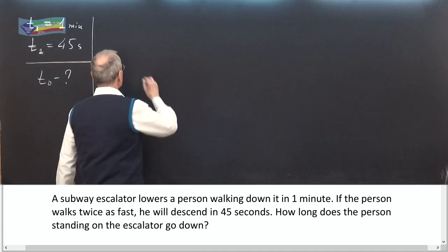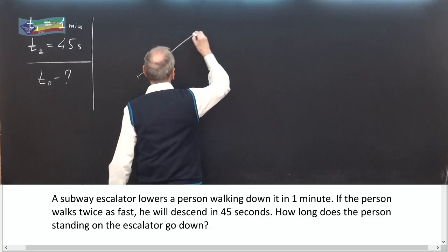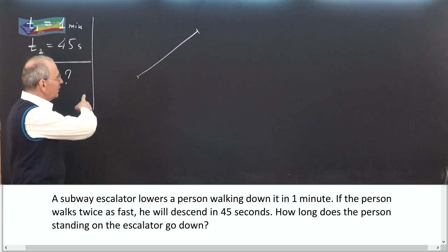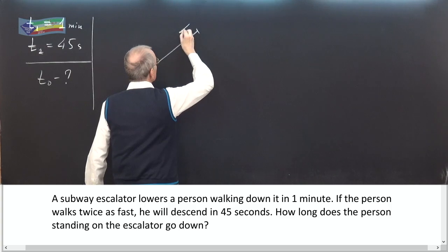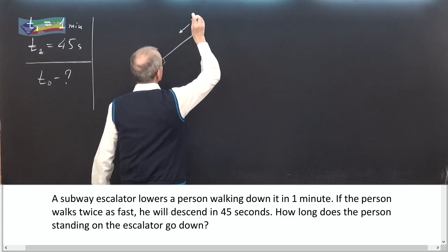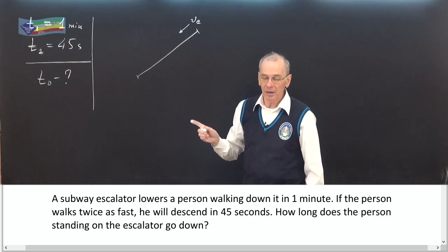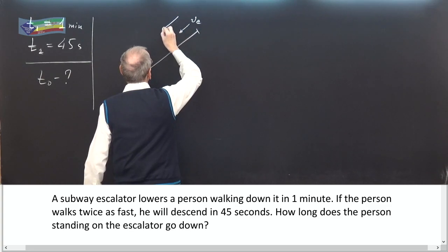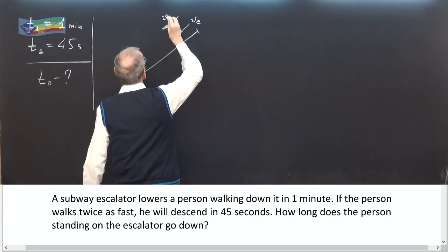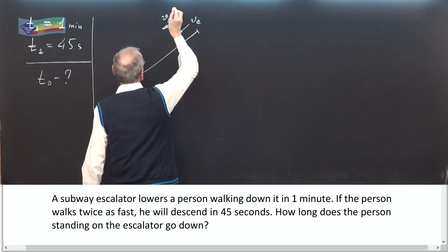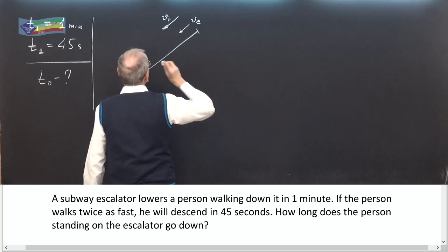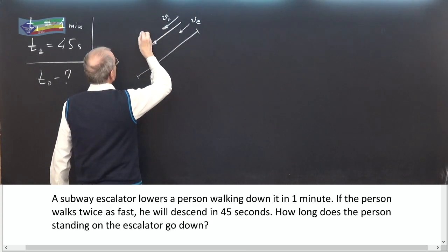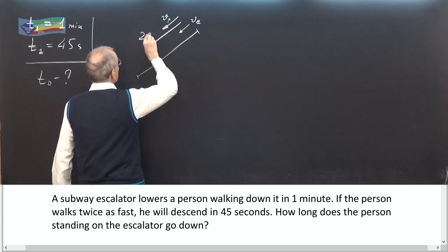Let's make a picture. This is the escalator. The escalator descends at a speed v-escalator. In the first case, a person lowers the escalator at normal speed, v-person. In the second case, the speed of the passenger is doubled — 2·vp.